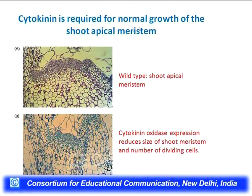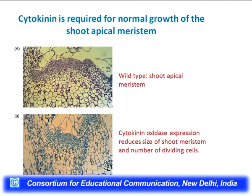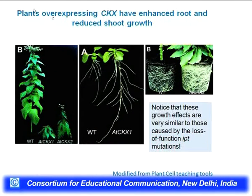Cytokinin is required for normal growth and development of the shoot apical meristem. This is the shoot apical meristem with the bud, peripheral organs like leaves. If you overexpress cytokinin oxidase, cytokinin levels drop because it is being degraded — and the effect is that the stem and meristem become very small. These two photographs are at the same magnification: in the wild-type plant the meristem is large, while in the overexpressing transgenic plant the meristem size is very reduced. This means cytokinin is required for maintaining meristem size. When cytokinin oxidase is overexpressed, plants are very short, but root levels go up because reduced cytokinin allows increased auxin activity.